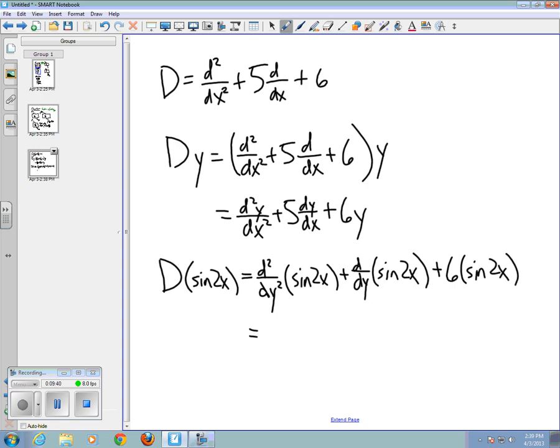So, in this case, it would be the second derivative of sin(2x) turns out to be -4sin(2x). And then, I forgot in here, I missed the 5. So, there should be a 5 right in here. Okay, so, then we take the derivative of 5sin(2x), which turns out to be plus 10cos(2x), and then plus 6 sin(2x).